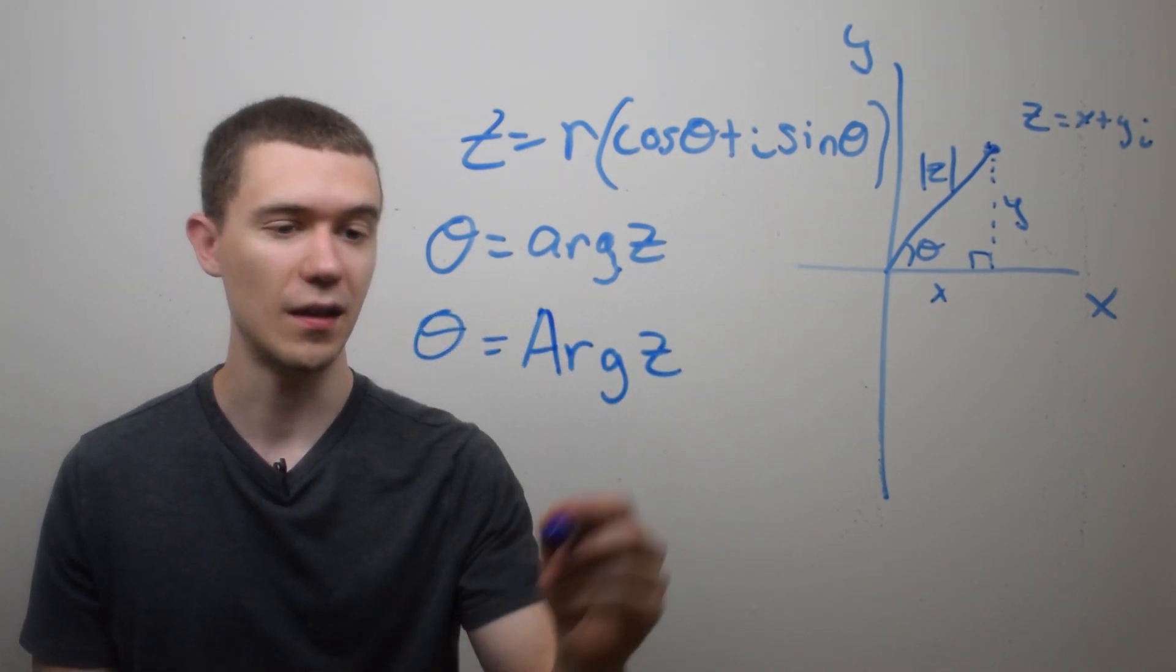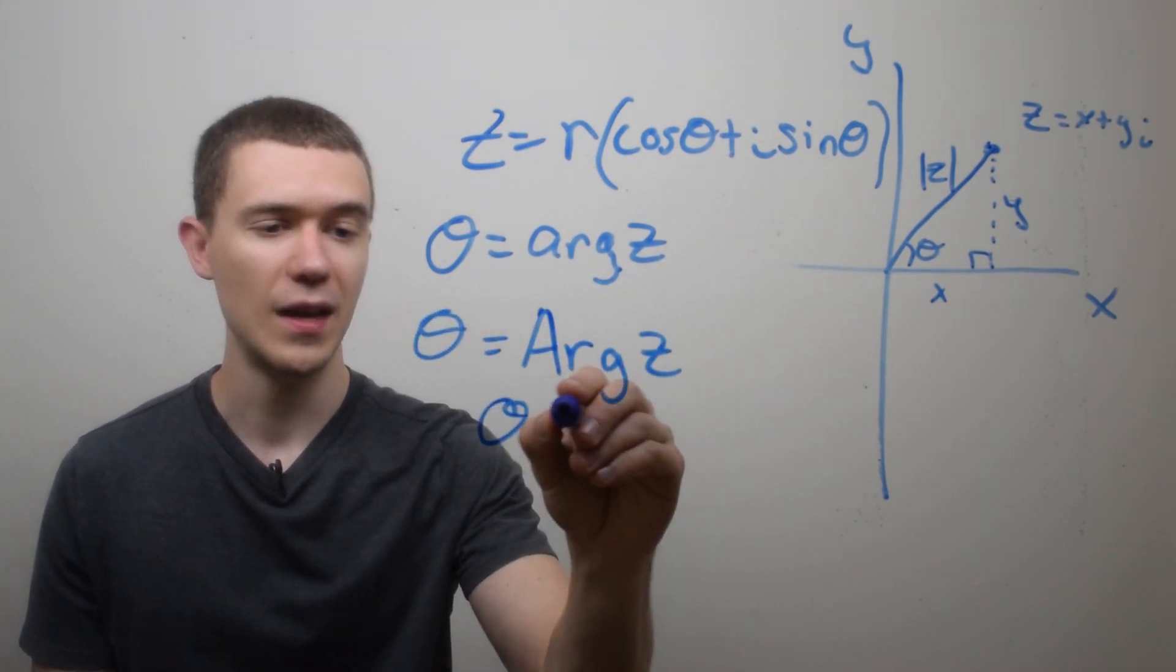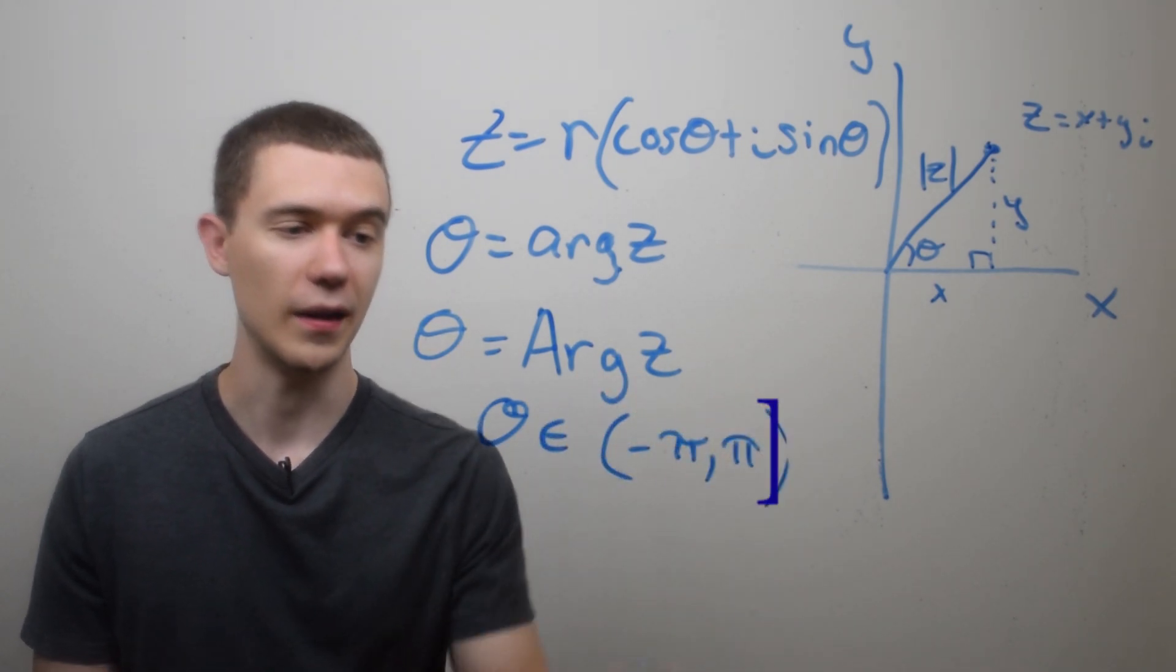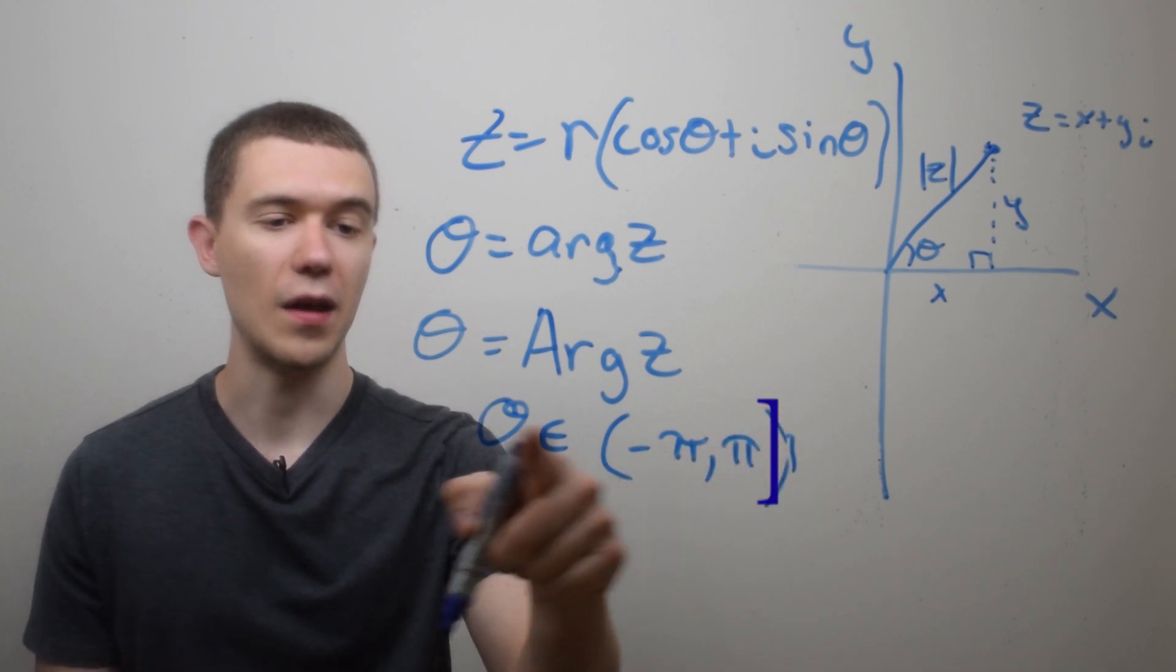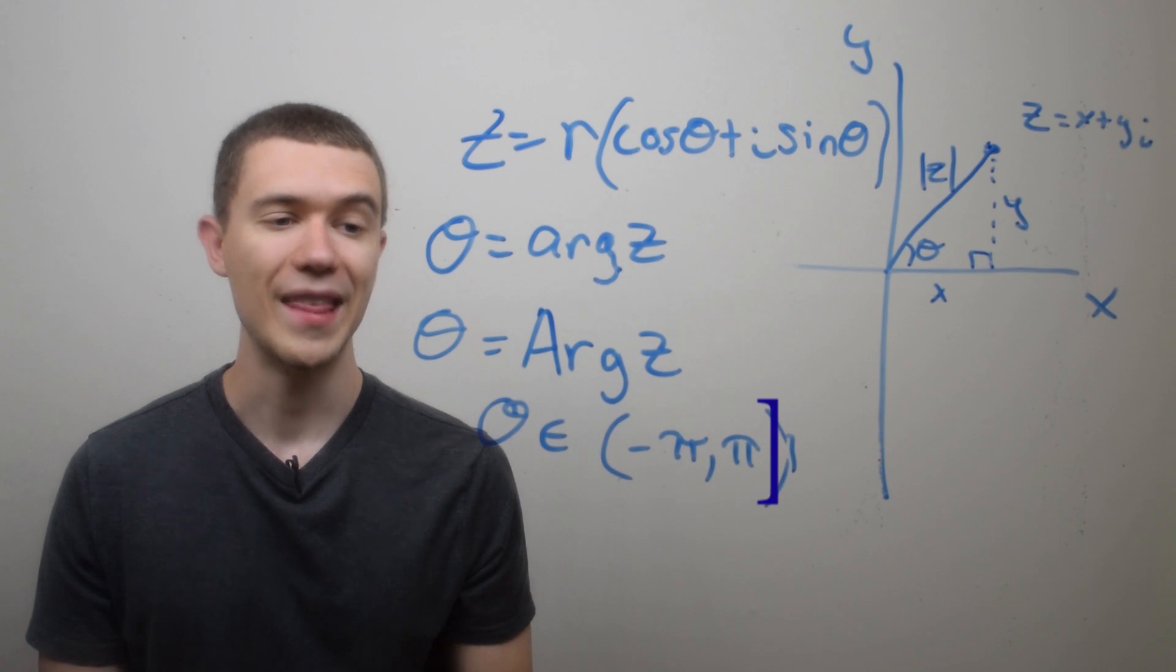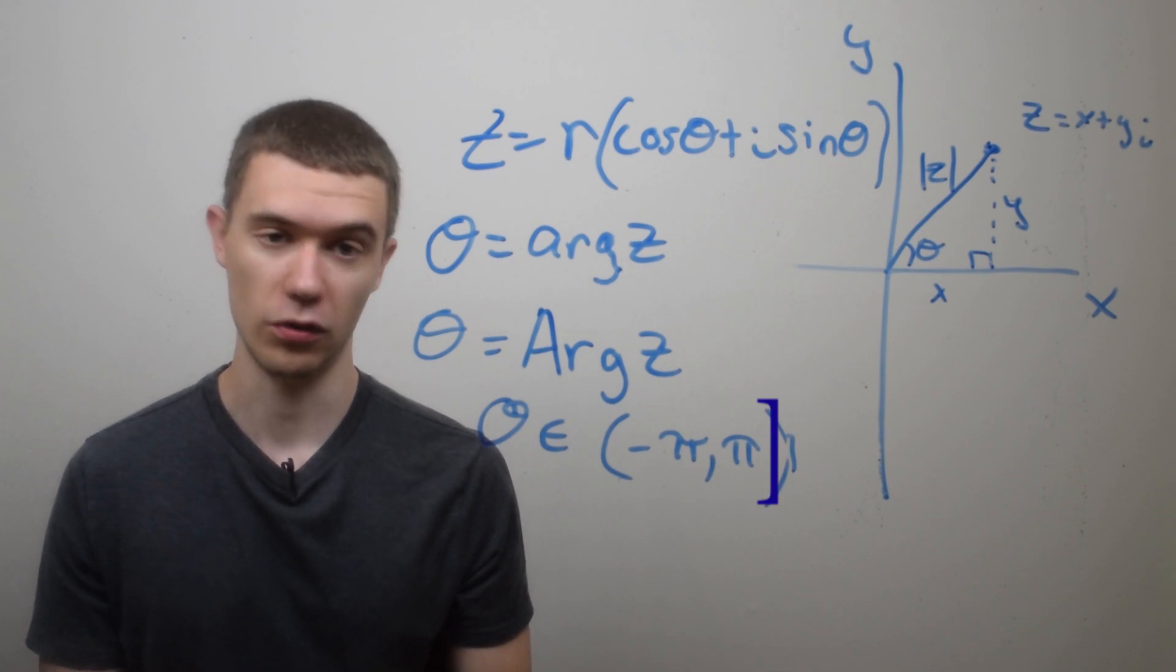And that's denoted capital arg z, which is theta, given that theta is inside the interval minus pi to pi. So the angle inside one revolution of a unit circle, that's the principal argument with a capital ARG.